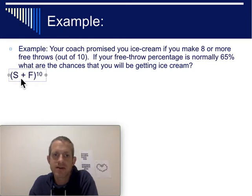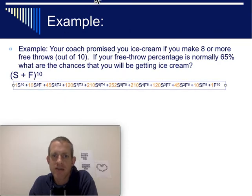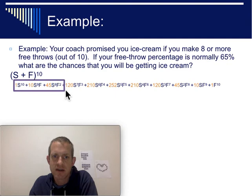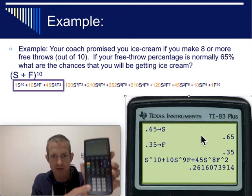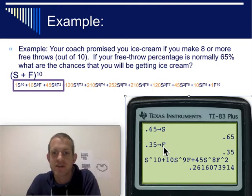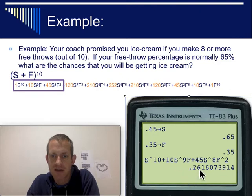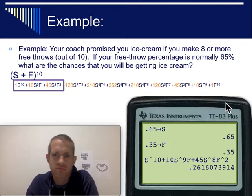You need to expand success plus failure to the tenth, because you're shooting ten free throws. The parts we're interested in are making eight, nine, or ten — having success eight, nine, or ten times. Type 0.65 into S using the store button on the calculator, and 0.35 for failure. Then type that expression, and you get about 26%. So your coach might be buying you ice cream, but chances are you probably won't hit eight or more if your success rate is only 65%.